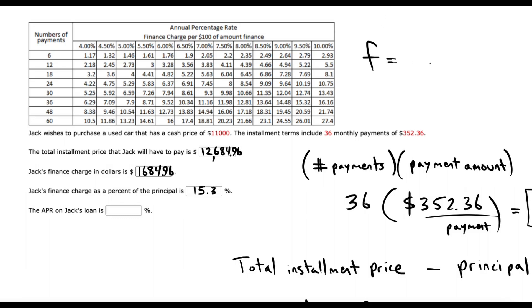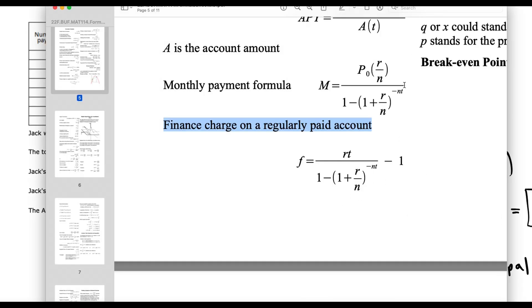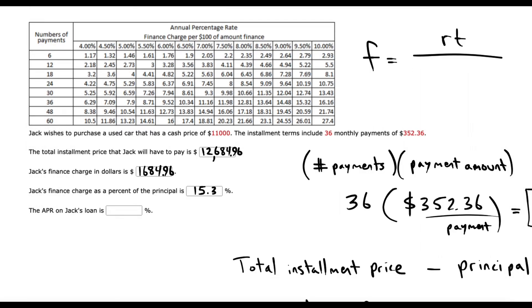There's a formula for F. And the formula is RT over 1 minus 1 plus R over N to the negative N.